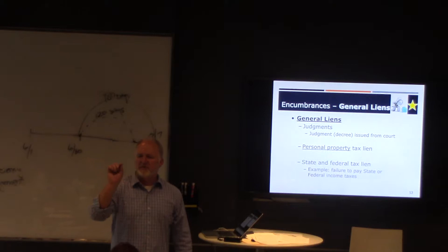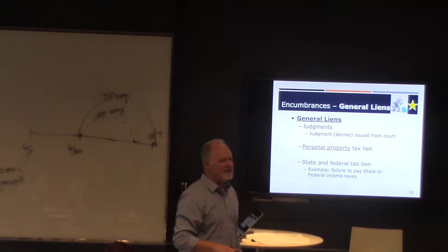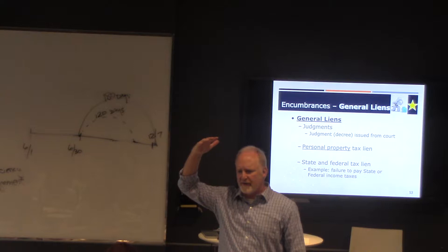General liens, I think of as being liens against persons rather than properties. But that's not true. The reason I say that is, remember specific liens were tied to a particular property, right? What happens with general liens is they will follow you, they will follow you. You remember that judgment I was talking about a little bit earlier? That judgment will follow you.